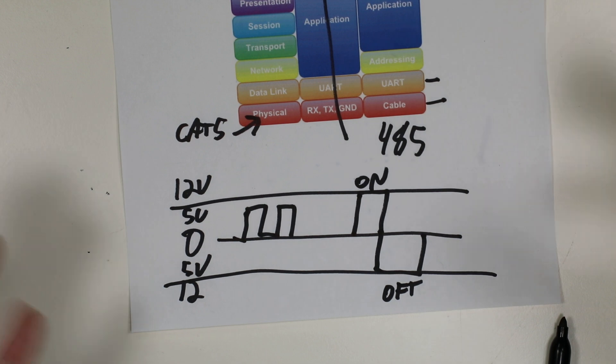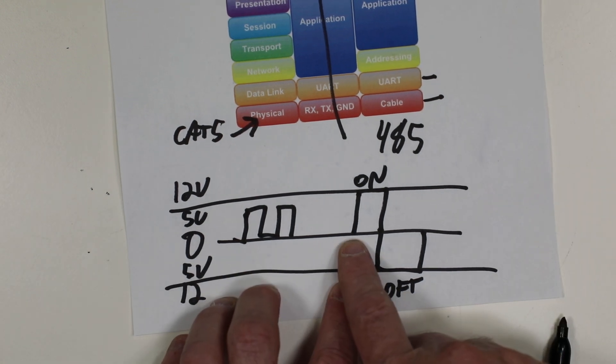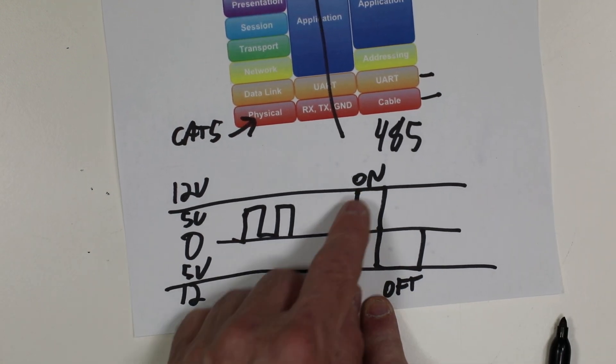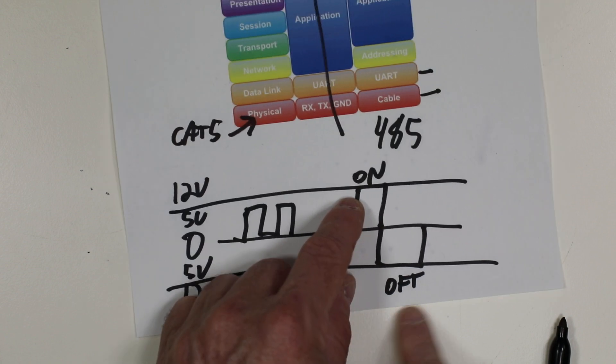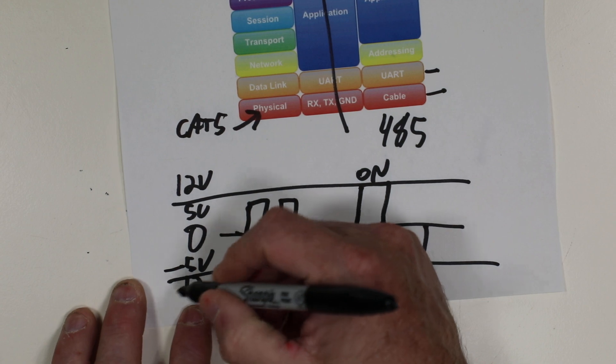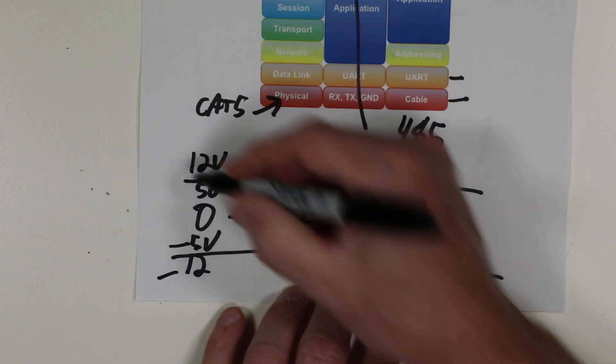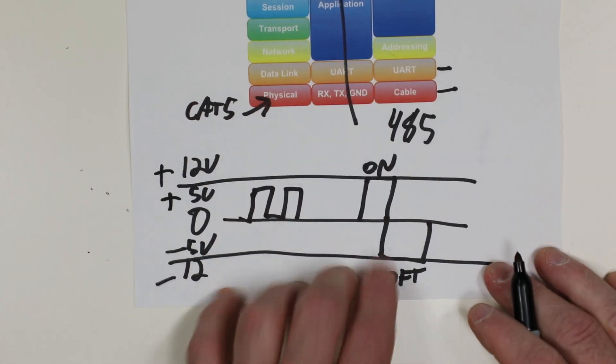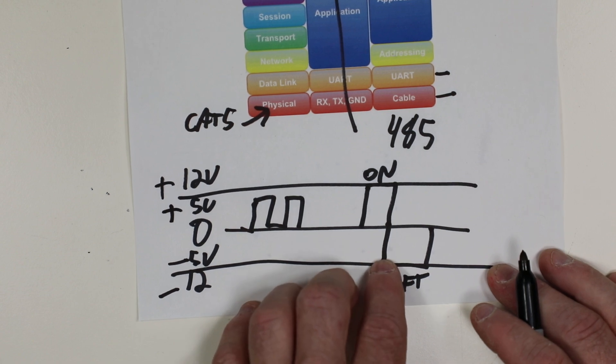But what happens when the differential between 5 or even 12 volts, so let's just do 5 here, and negative 5, because these are actually negative numbers, and these are positive numbers. Now we have 10 volts of difference.